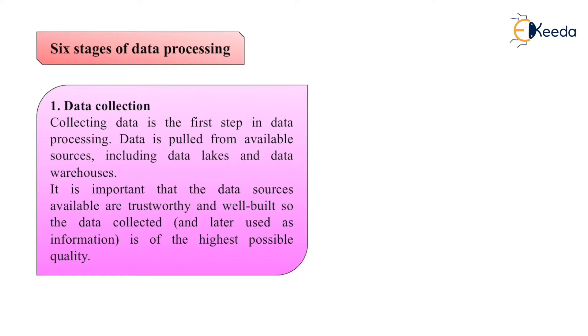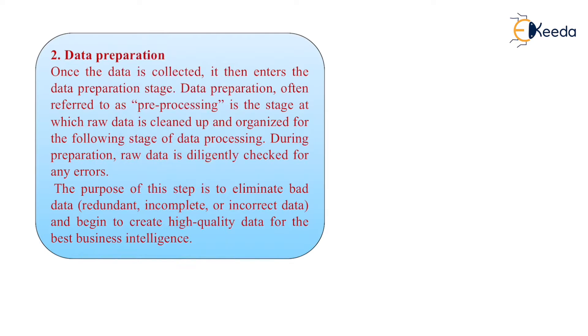The second stage is data preparation. Once the data is collected, it then enters the data preparation stage. Data preparation, often referred to as pre-processing, is the stage at which raw data is cleaned up and organized for the following stage of data processing. During data preparation, the raw data is deliberately checked for any errors. The purpose of this step is to eliminate bad data - redundant, incomplete, or incorrect data - and begin to create high-quality data for the best business intelligence.